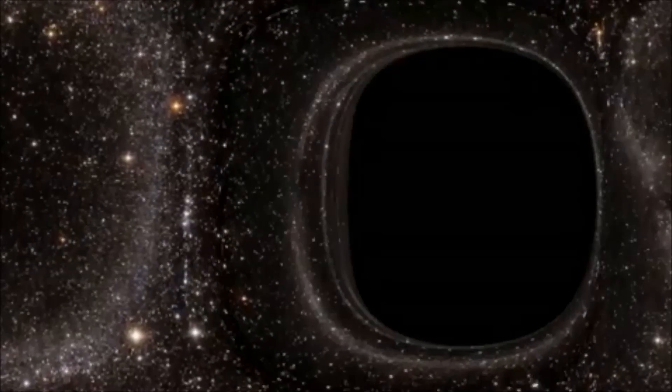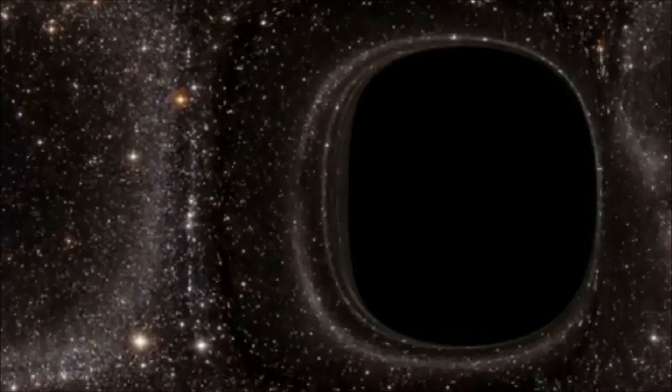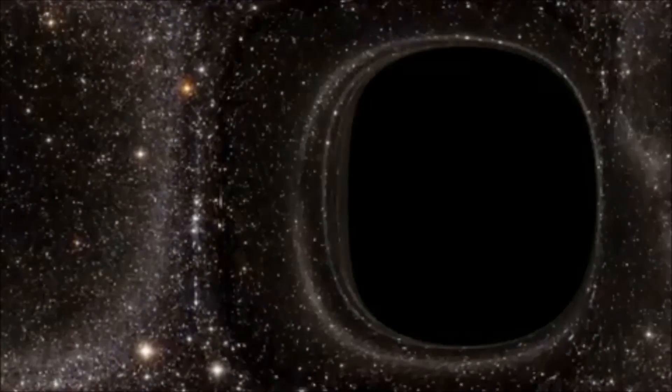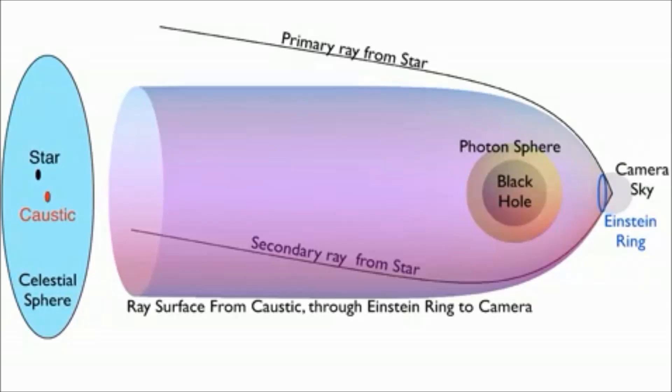By using these beams, we are able to maintain the point-like nature of unresolved stars and achieve the smooth motion needed for an IMAX movie. One thing we noticed about our beams was they gave a very clear depiction of Einstein rings.